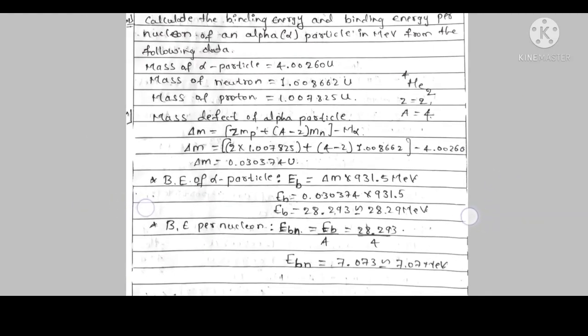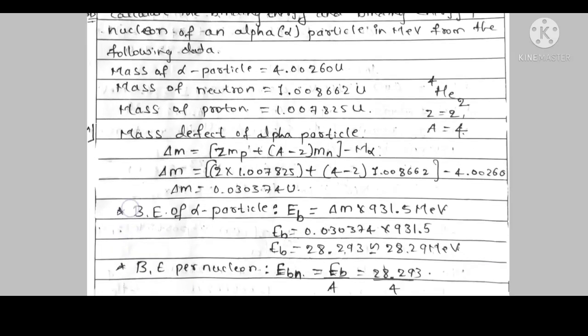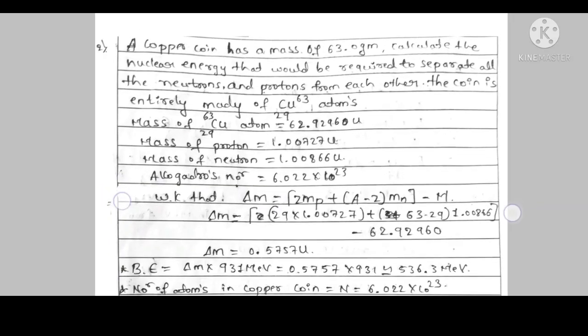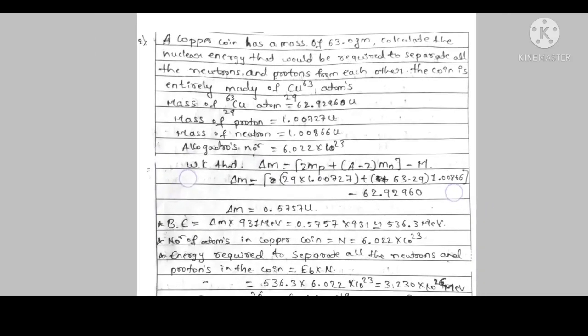Here is a question: Calculate binding energy and binding energy per nucleon of an alpha particle in mega electron volt from the following data. In this question, they will give mass of alpha particle, mass of neutron, mass of proton. We should calculate binding energy and binding energy per nucleon. The alpha particle is helium-4 with atomic number 2. You should follow this method to calculate.